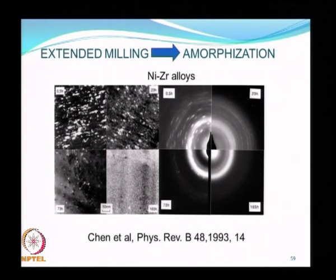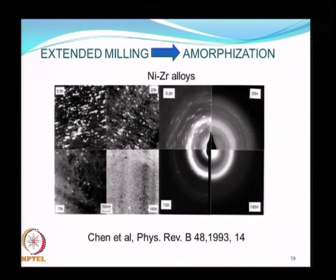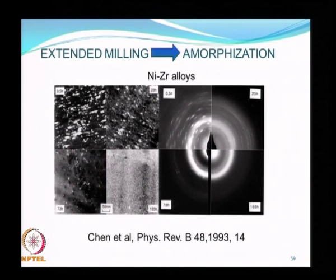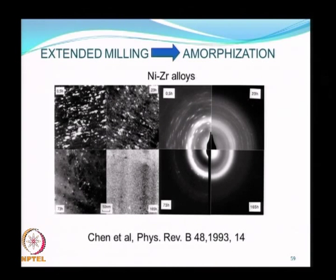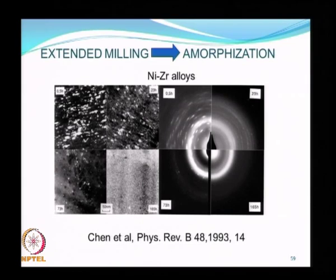Extended milling also leads to amorphization. A series of graphs taken at various time intervals—ranging from 23 hours to 73 hours to 165 hours—shows that material that started out as highly crystalline, with easily identifiable structure, soon reaches an amorphous form. Testing with X-ray diffraction would confirm it is a highly non-crystalline material. One of the problems with extended high energy ball milling to make nanoparticles is that it is very difficult to obtain crystalline materials; over time, amorphization occurs and is very difficult to avoid.